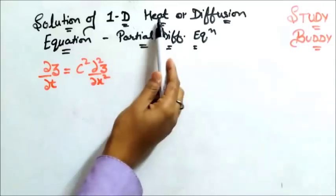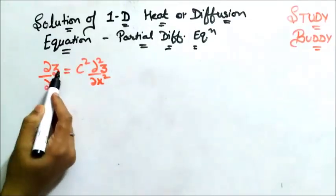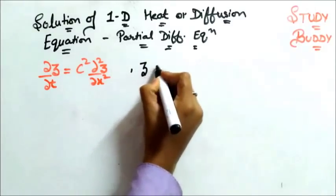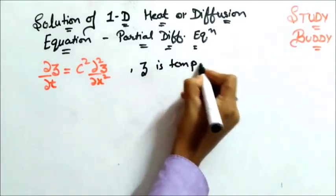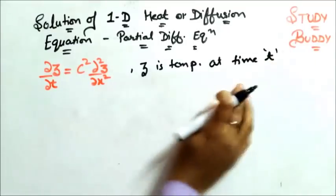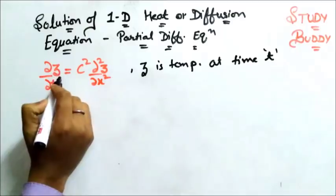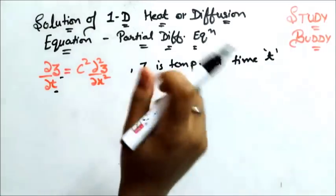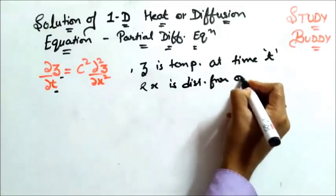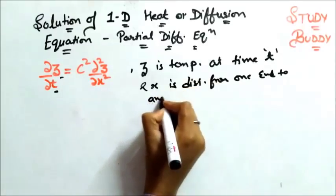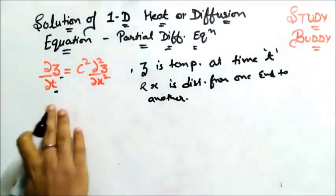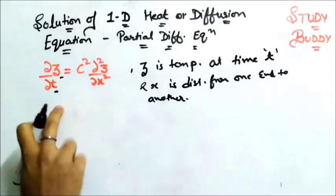The heat or diffusion equation is given as: del Z by del T equals C squared times del squared Z by del X squared. Here Z is temperature, T is time, and X is the distance from one end to another. This is your one-dimensional heat equation. Because the order is one, it is one-dimensional.